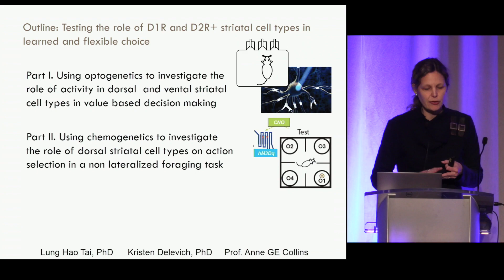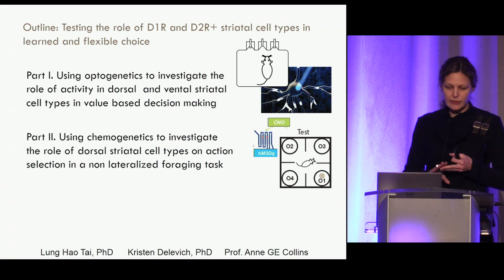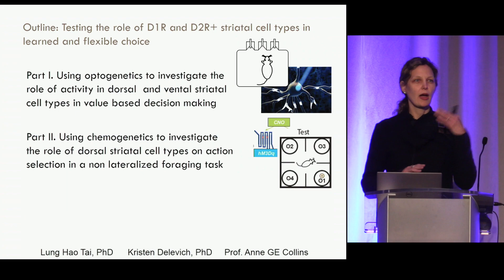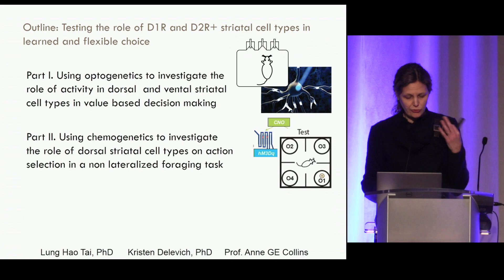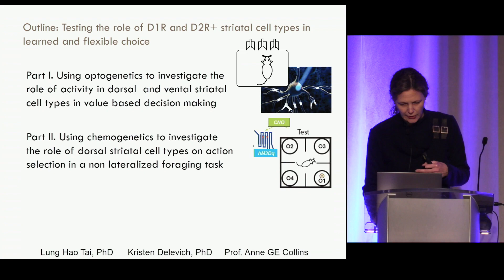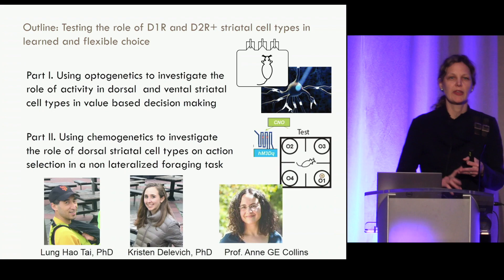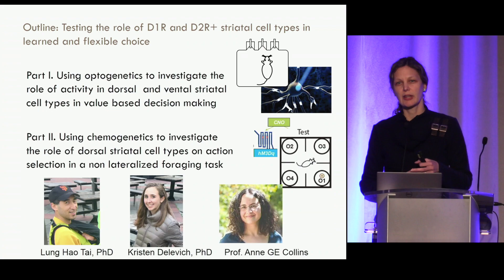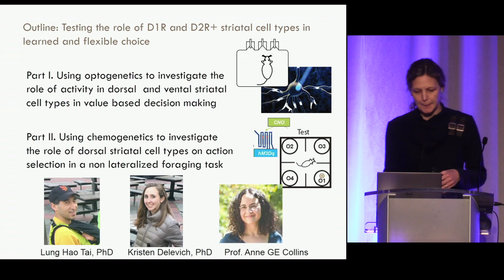In part one, I'll tell you about optogenetic experiments in the context of a task. We stimulated the dorsal and ventral striatum on the medial side in a value-based decision-making task. In part two, I'll tell you about our use of chemogenetics in the dorsal striatum in a non-lateralized foraging task. I'd like to acknowledge Long How Thai and Moses Lee for the work in part one, Kristen Delovich for part two, and Ann Collins as our computational collaborator who developed the models we used.